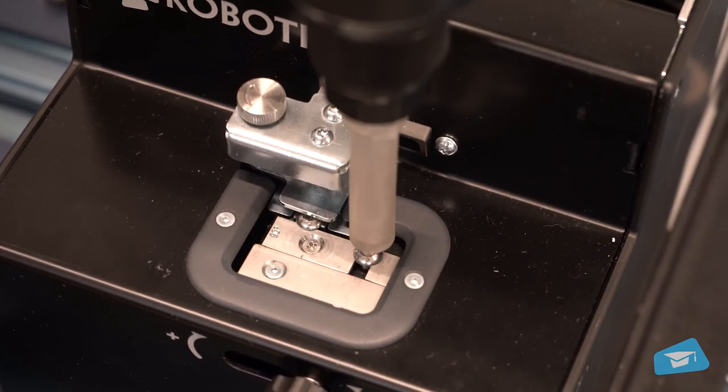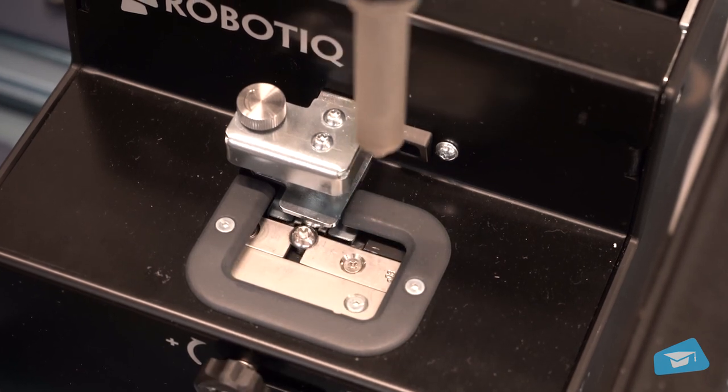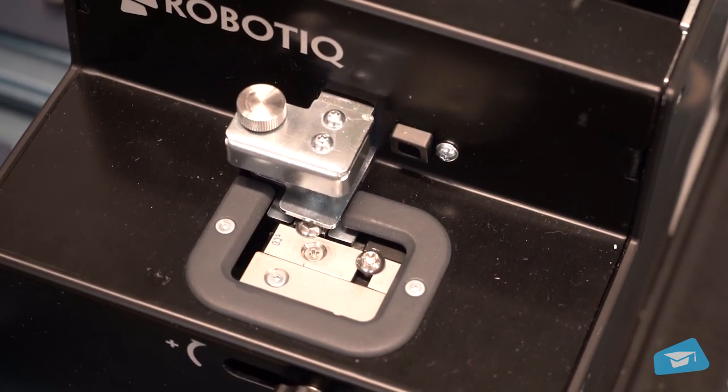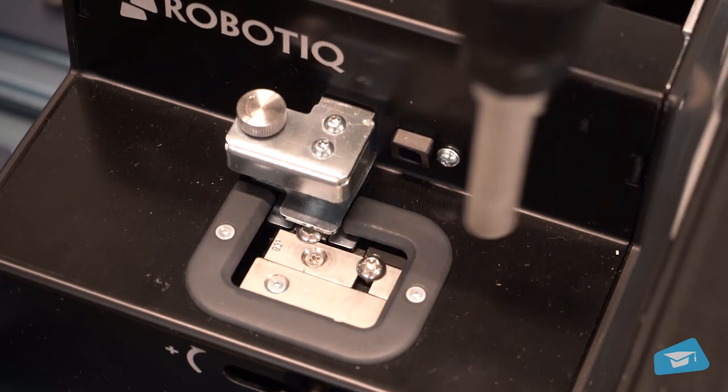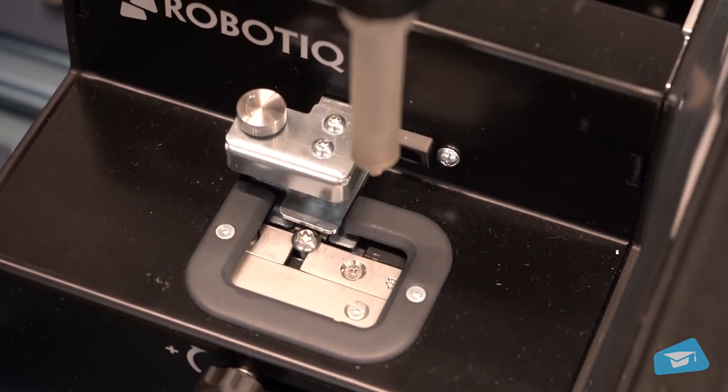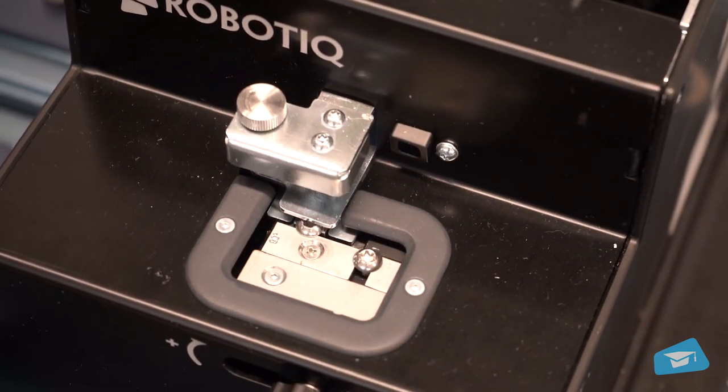If screws are lining up and getting to the singulator, this means the screw feeder has been adjusted correctly. Congratulations! Your screw feeder is now up and running and adjusted to fit your screws.